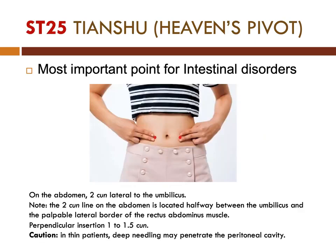The next point is Stomach 25, the front-mu point of the large intestine, also called Heavens Pivot. It is the most important point for intestinal disorders. To locate this point on the abdomen: 2 cun lateral to the umbilicus. This 2 cun line is located halfway between the umbilicus and the palpable lateral border of the rectus abdominus muscle. It is needled with perpendicular insertion, 1 to 1.5 cun. Caution should be observed in thin patients as deep needling may penetrate the peritoneal cavity.